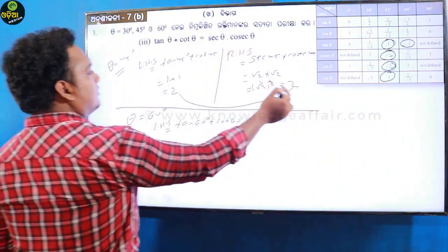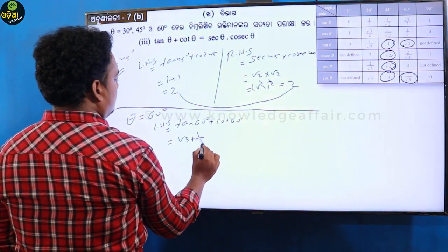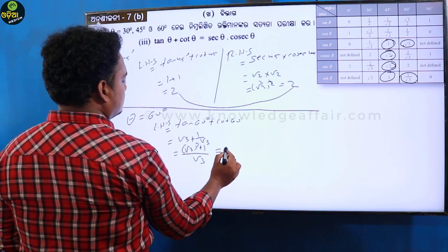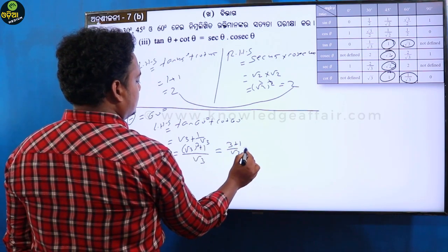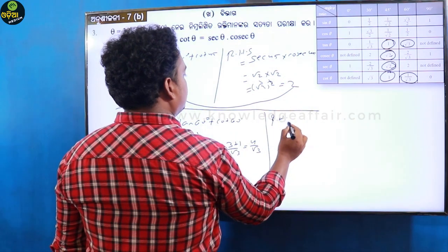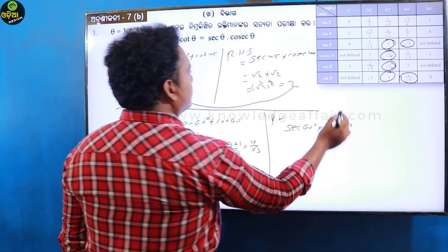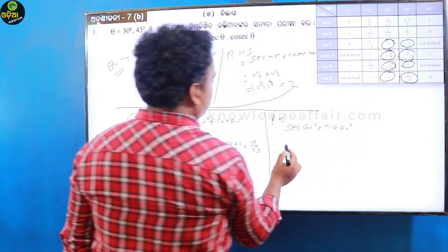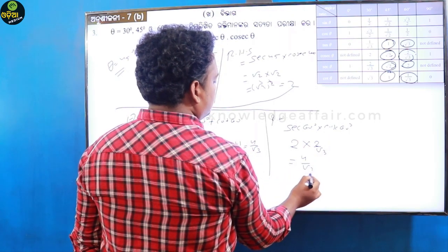For theta equals 60 degrees, LHS is 1 over tan 60 plus cot 60, which is 1 over root 3 plus root 3. This simplifies to 4 by root 3. RHS: sec 60 into cosec 60 equals 2 into 2 by root 3, which equals 4 by root 3.